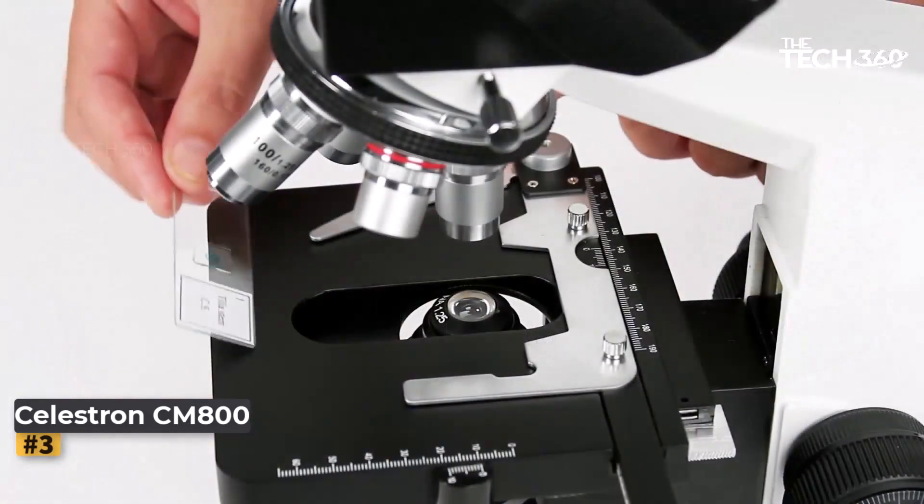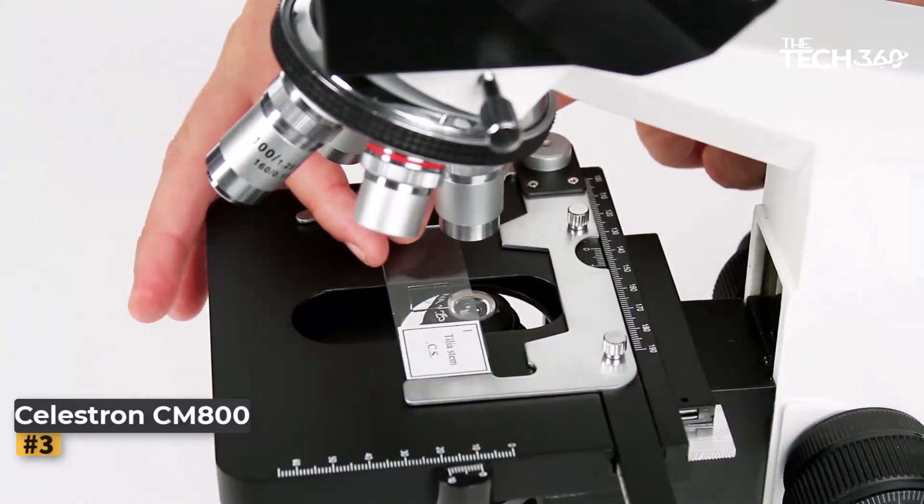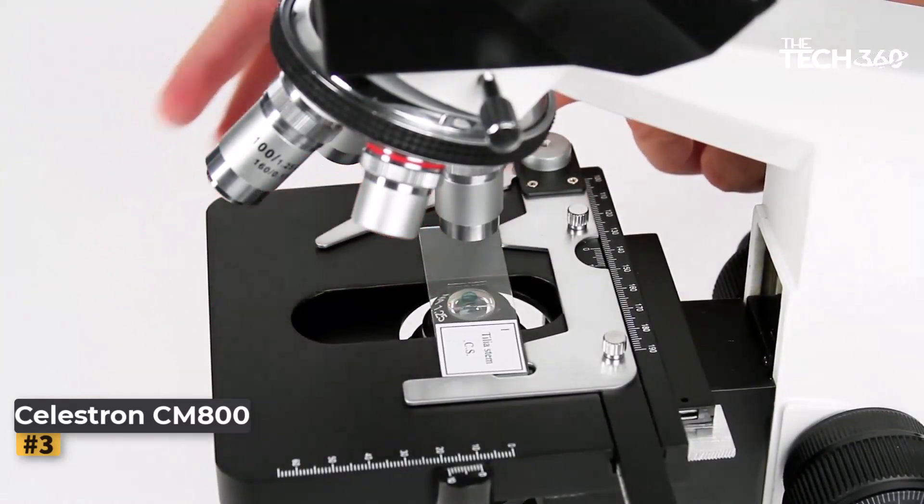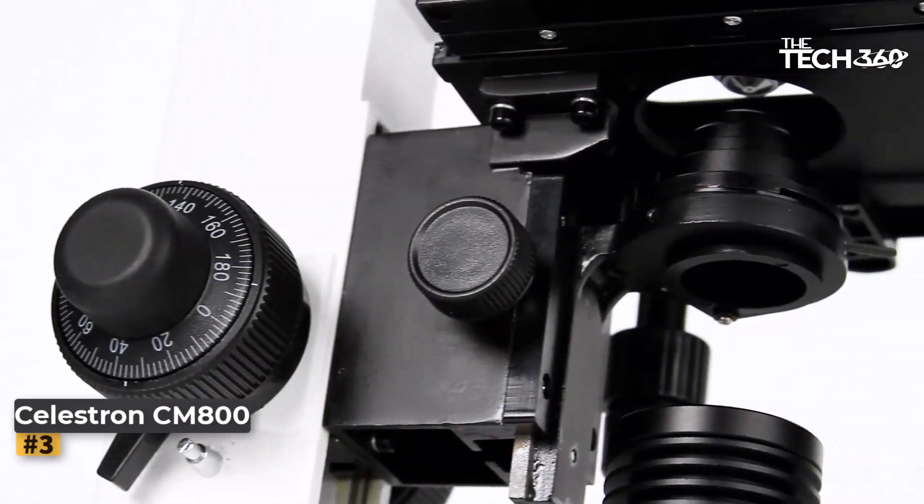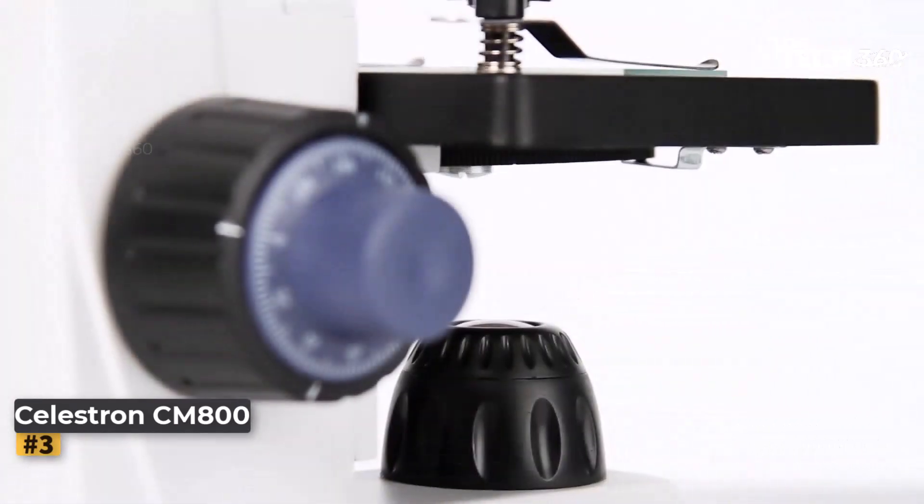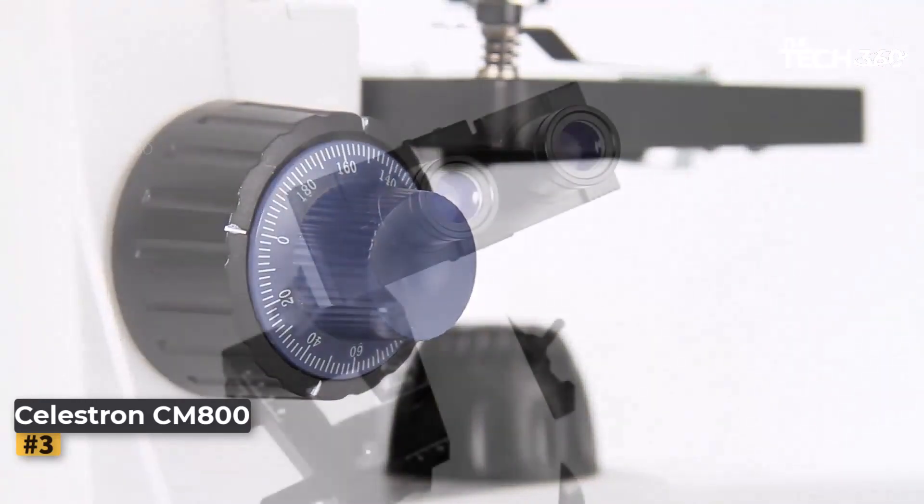The built-in LED illumination can be adjusted, and the microscope can be powered by batteries, making it suitable for field use. With its ease of use and durability, the Celestron CM800 is a reliable companion for both in-classroom and outdoor observations.